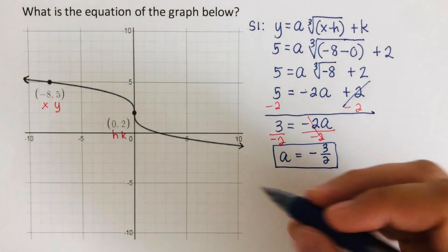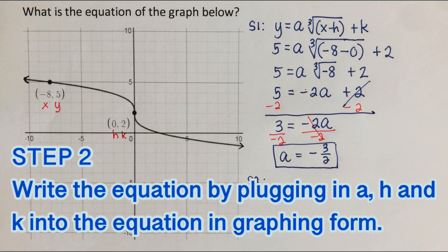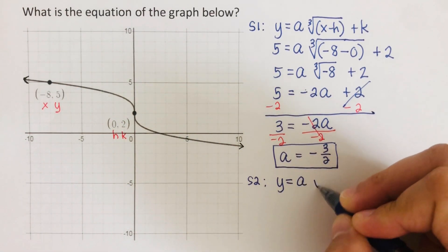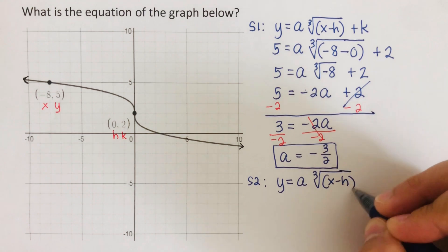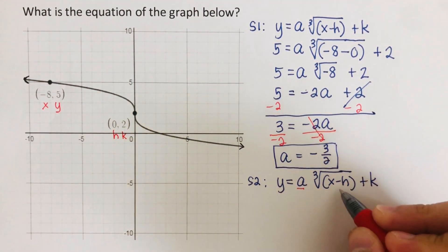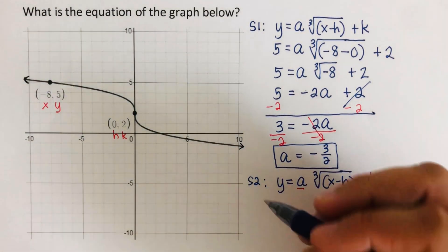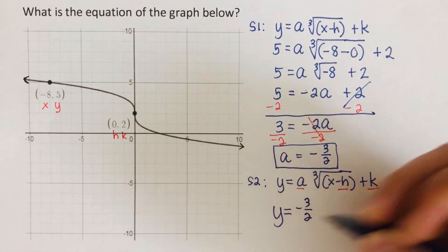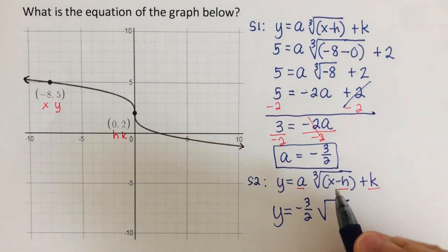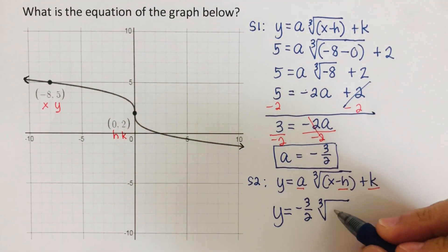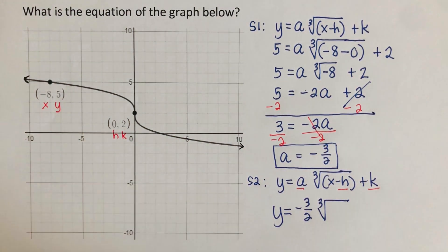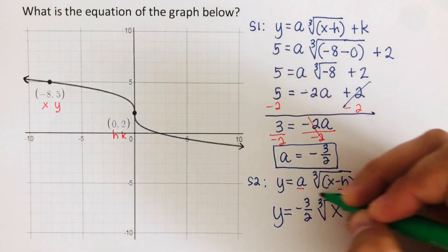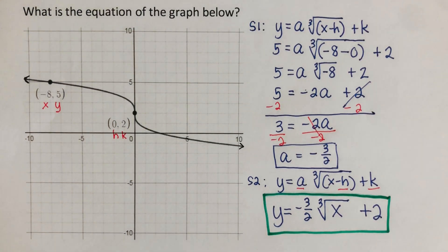In Step 2, we write the equation by plugging in a, h, and k only. The equation is y equals a times the cube root of x minus h, plus k. Our a is negative 3 over 2, h is 0 so we don't need to write x minus 0, and k is 2. The final equation is y equals negative 3 over 2 times the cube root of x, plus 2. This is the equation for this graph.